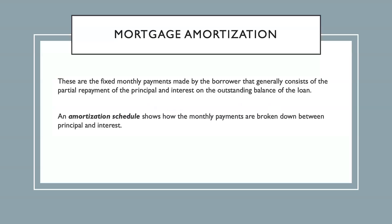So let's recap that a little bit. What is mortgage amortization? Mortgage amortization is the fixed monthly payments made by the borrower that generally consists of the partial repayment of the principal and interest on the outstanding balance of the loan. We use an amortization schedule because it shows us how the monthly payments are broken down between the principal and the interest.